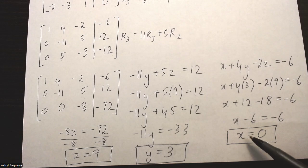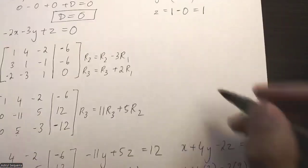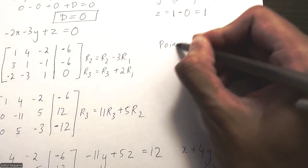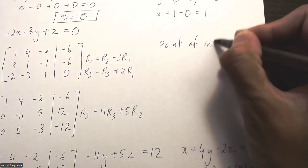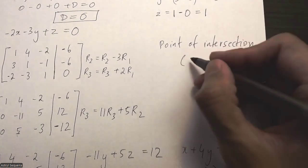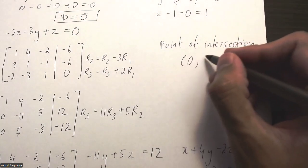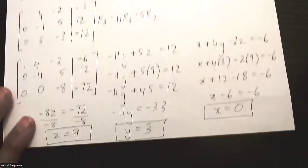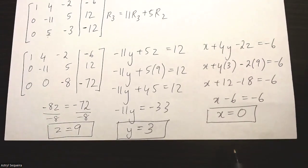So because I got a unique solution for x, y, and z in this question, it means that there's a point of intersection between these three planes, and the point of intersection is just (0, 3, 9). That's the x, y, and z values that I calculated from the matrix.